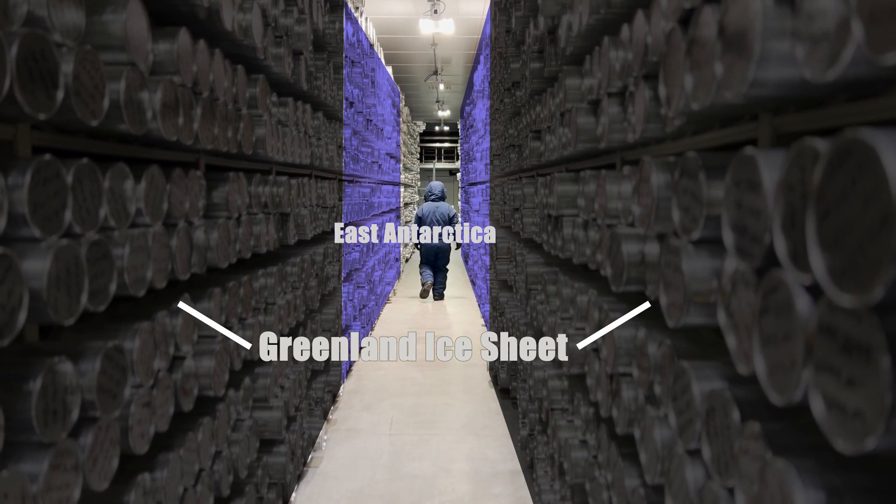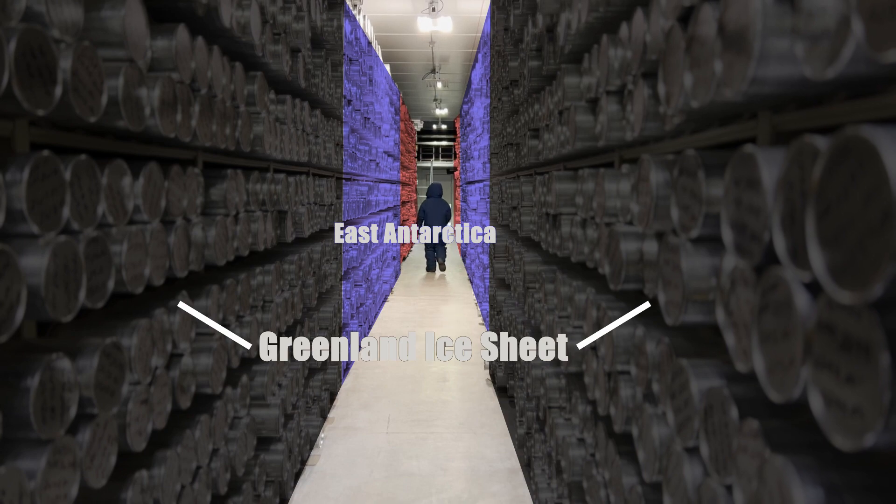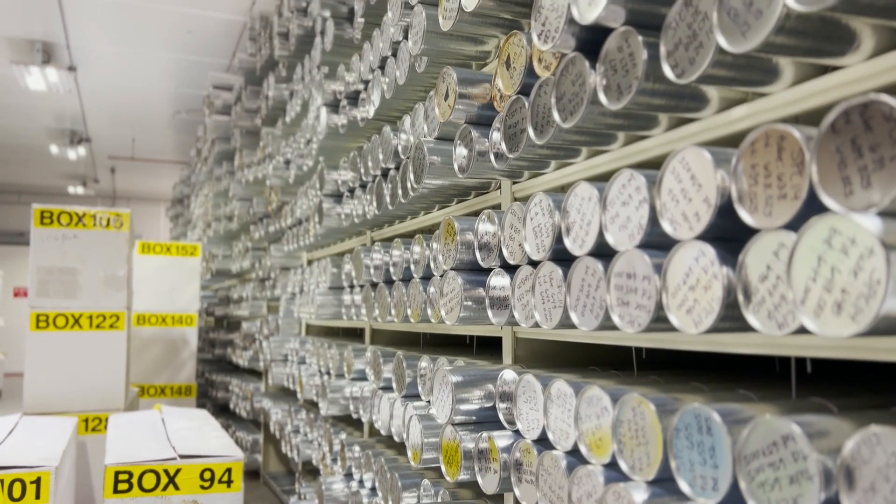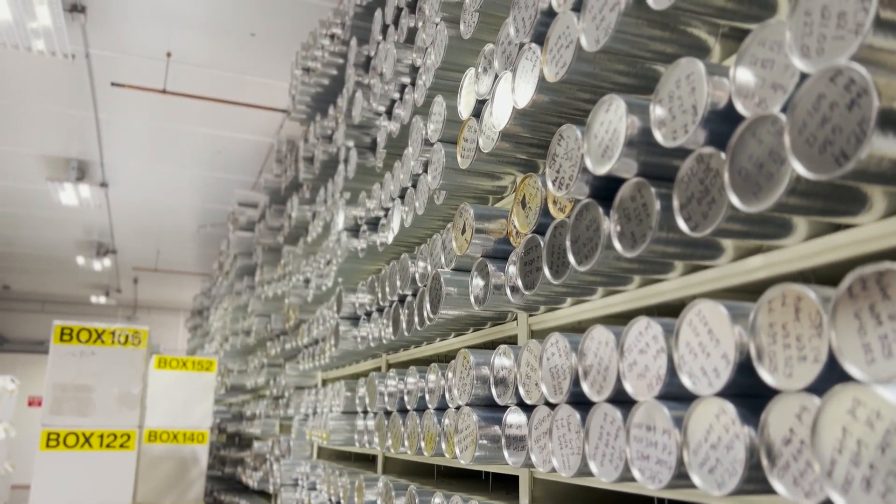They can record hundreds of thousands or even millions of years of climate history. Each of these grey tubes contains a one-meter section of ice, part of a larger core drilled.